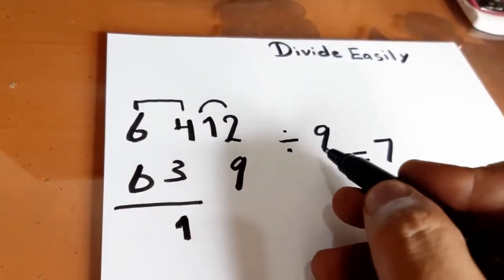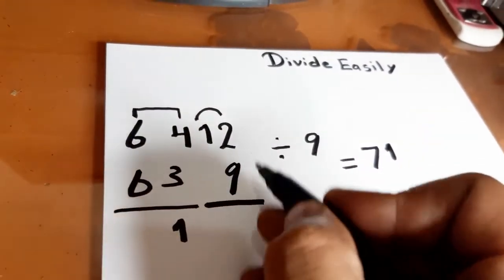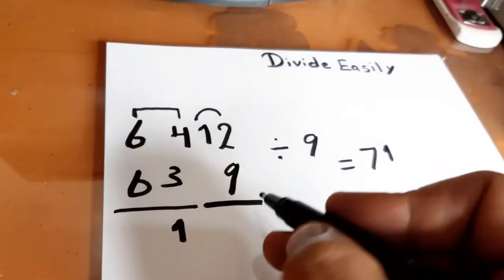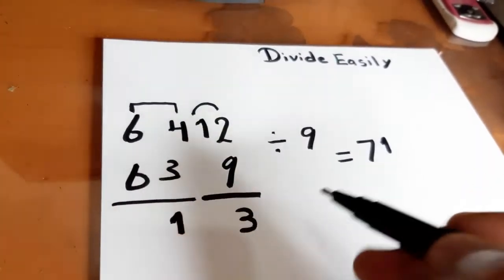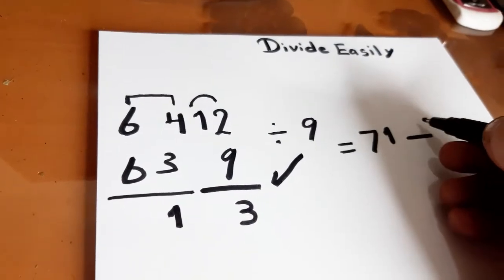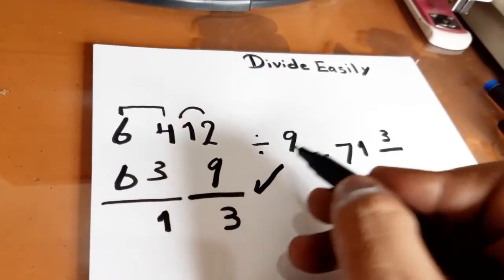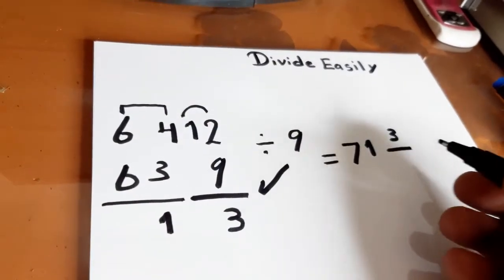9 divided by 9 equals 1. What is the difference between 12 and 9? The difference is 3. So we have 3 here above as a numerator and 9 will be written below as a denominator.